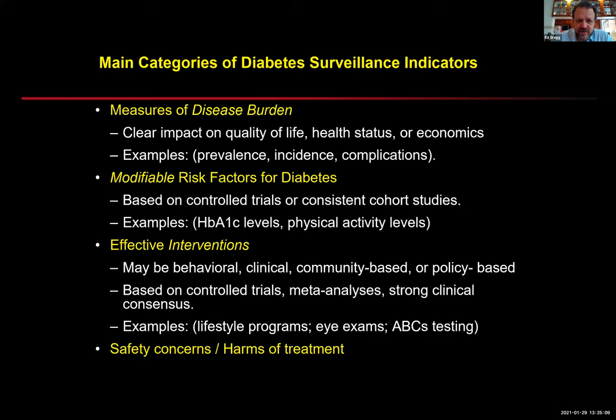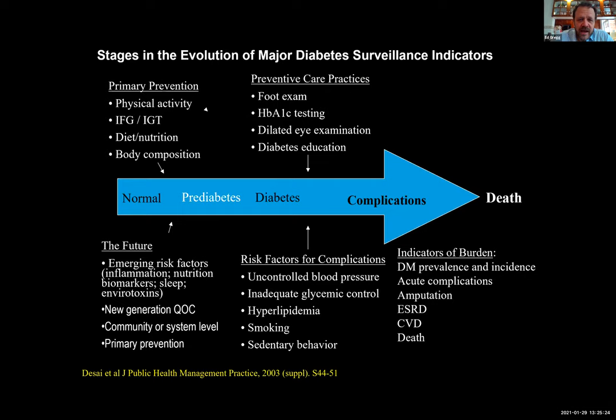The US surveillance system measures disease burden, tracks modifiable risk factors, and ultimately seeks to understand whether evidence-based interventions are being provided to the population, and to look at safety concerns and treatment harms. We can think about surveillance metrics across the continuum of risk — focusing on those with complications to reduce risk of disability and death, among those with diabetes to reduce risk of complications, and among those with prediabetes to reduce progression.